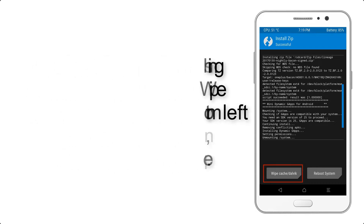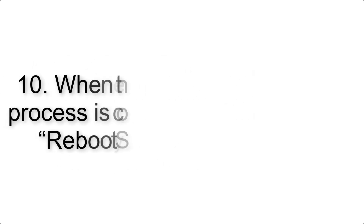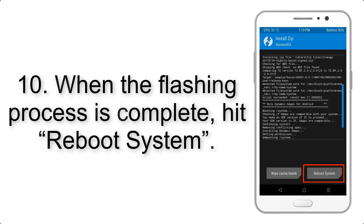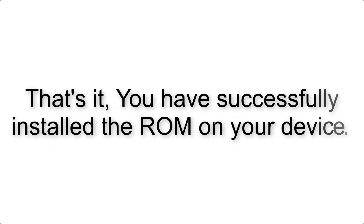Swipe to wipe. Step 10: When the flashing process is complete, hit Reboot System. That's it — you have successfully installed the ROM on your device.